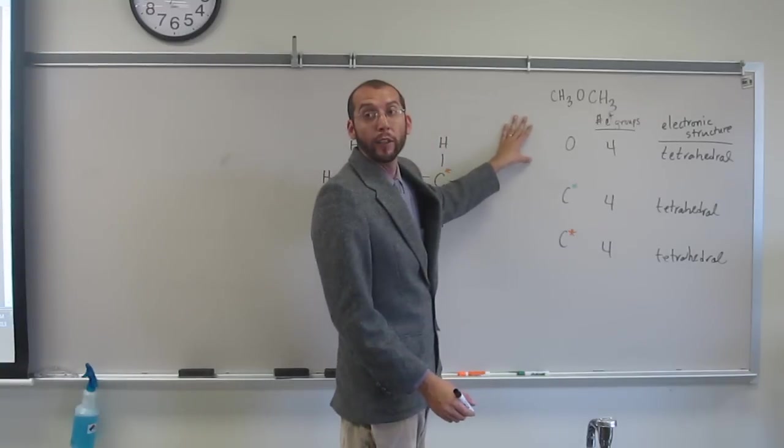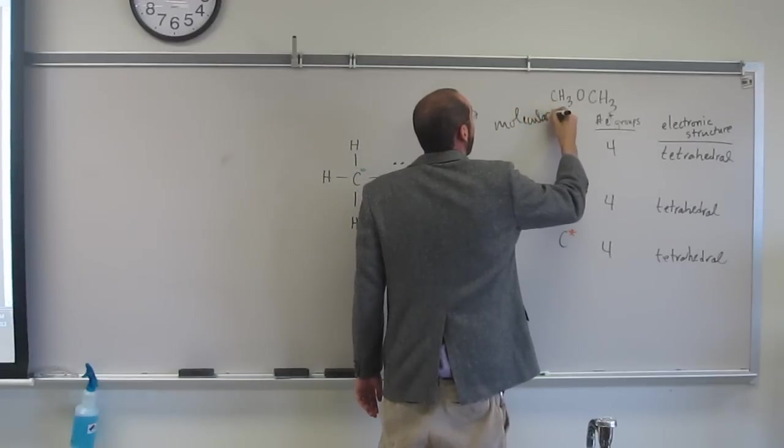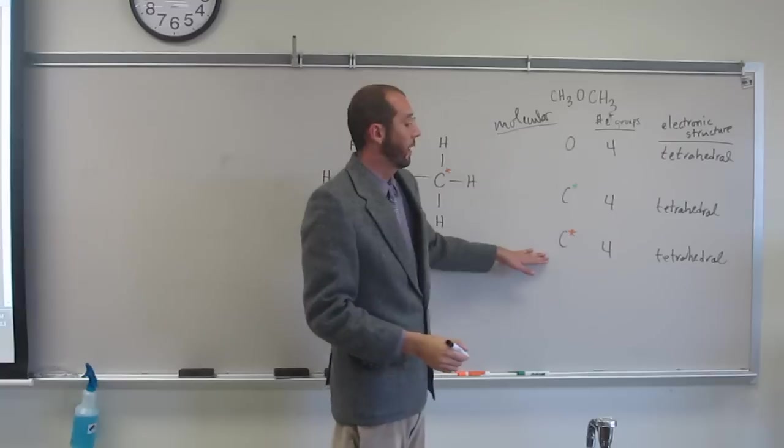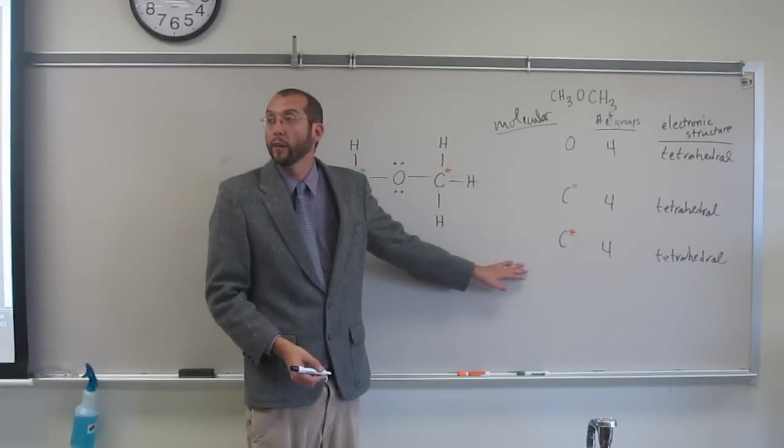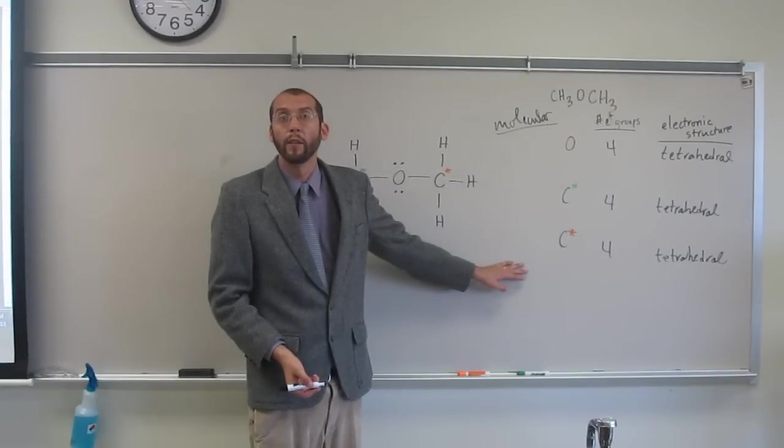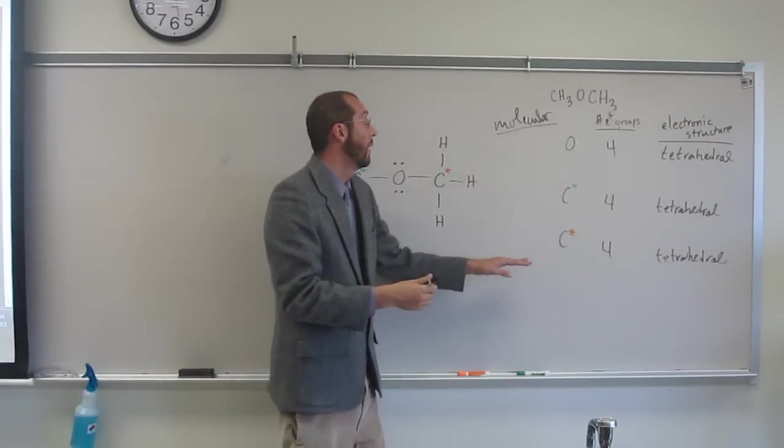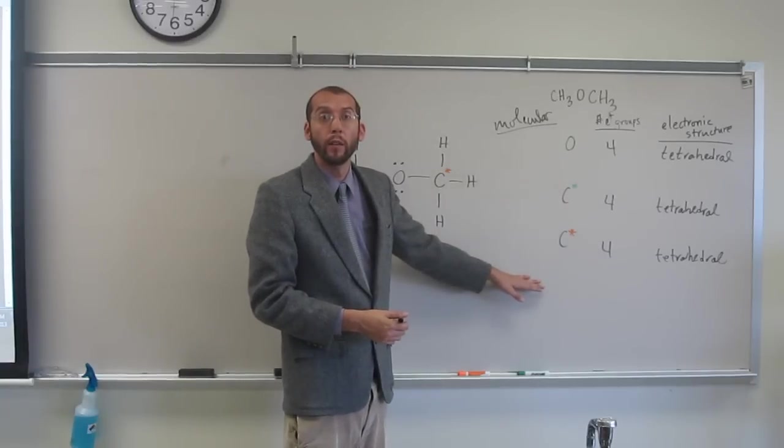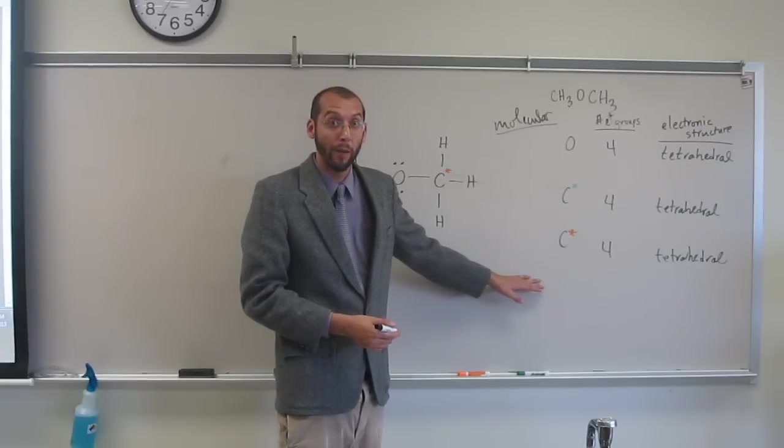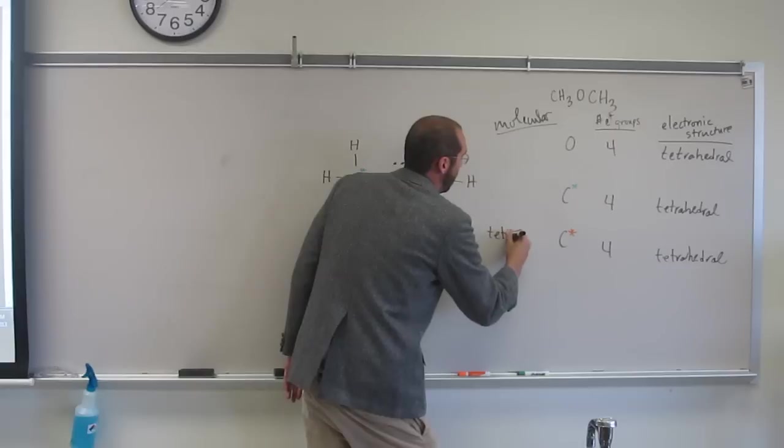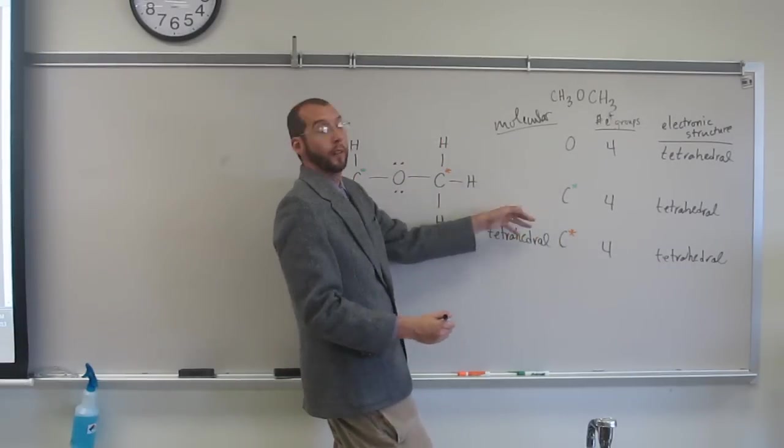And what about the molecular structure? So let's do molecular now. Sorry, I don't have enough room on the other side. So the molecular structure around the orange carbon is going to be what? How do we figure that? Tetrahedral. Tetrahedral. Because there's four atoms around that central atom. Right? So the molecular structure everybody is going to be what? Tetrahedral. Right. Why? Four atoms, right? What about the green carbon? Tetrahedral. Tetrahedral as well.